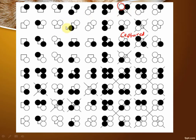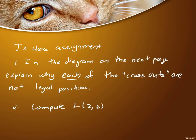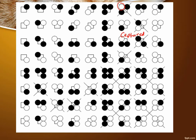What I'd like you to do is go through that diagram and explain why each one of the cross-outs are not legal positions, and then compute L(2,2). That's what you're doing here — they have listed everything possible and then they're crossing out the illegal moves. So computing L(2,2) means just counting what's left after the cross-outs.